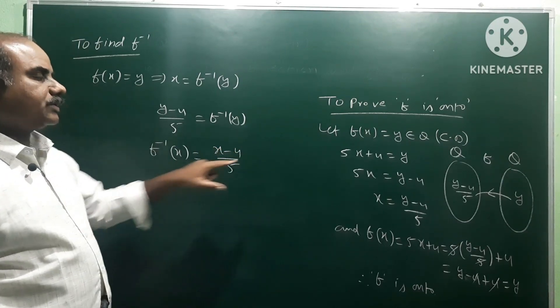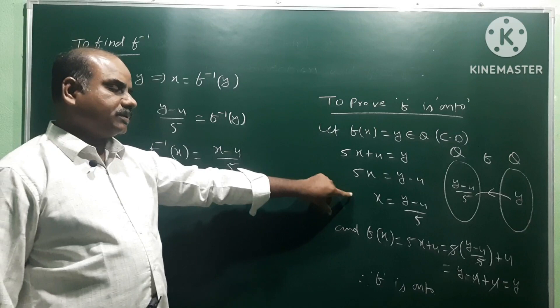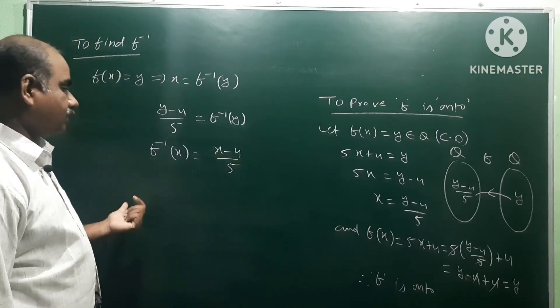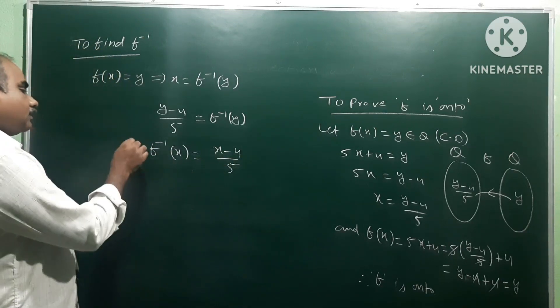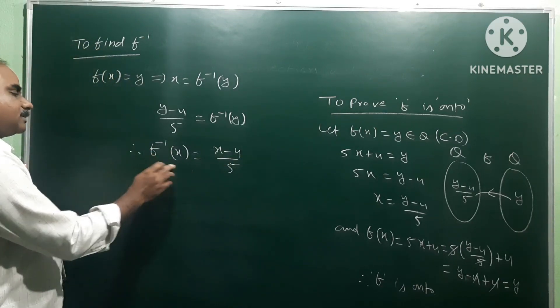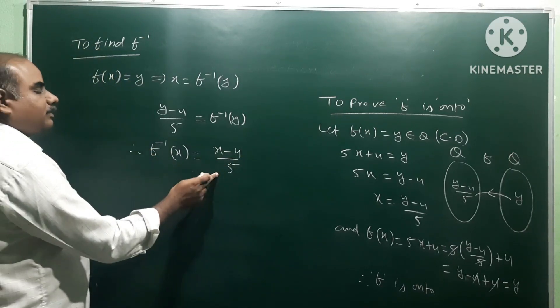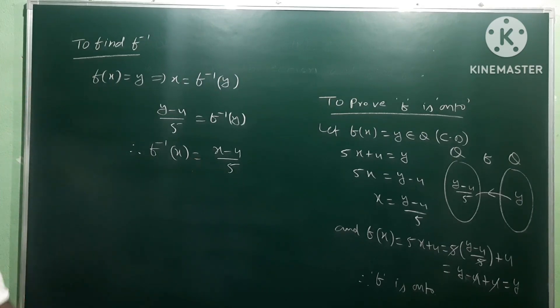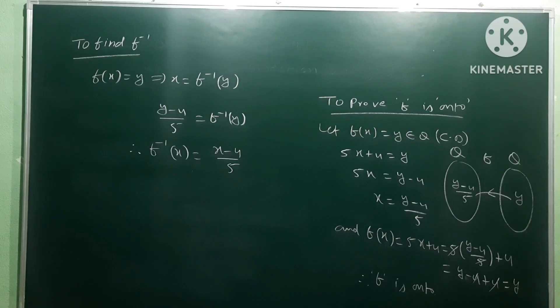Since we have already proved f is one-to-one and onto, f inverse exists. Therefore f inverse(x) = (x - 4) / 5. This is the required answer.